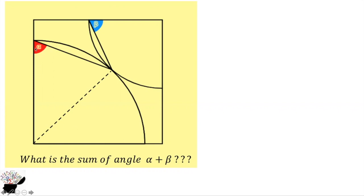Now we have two sides that are equal. When we consider this triangle, two sides are equal, so it will form an isosceles triangle. An isosceles triangle has two angles that are equal. So if this side is alpha, this side will also be alpha, because the lengths are the same. The sum of angles in a triangle is 180, so if this side is alpha and this side is alpha, this angle will be 180 minus 2 alpha.